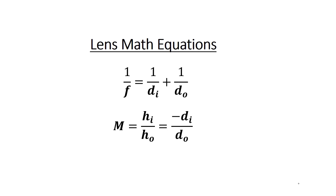I'm going to go over some basic lens math and some information you need to know to help you out with the problems. We're going to start off with these two equations — the main lens and mirror equations. We have F for focal distance, DI for distance to the image, DO for distance to the object, M for magnification (how many times bigger or smaller something is), HI for height of the image, and HO for height of the object.